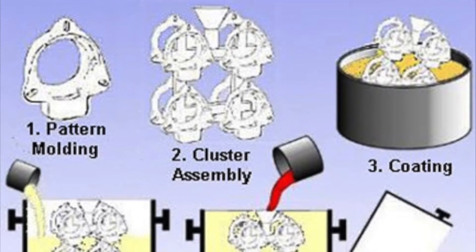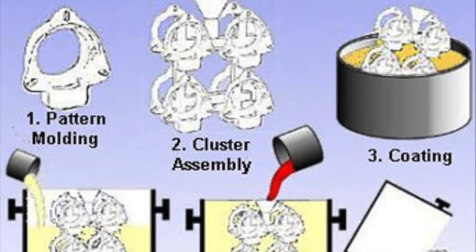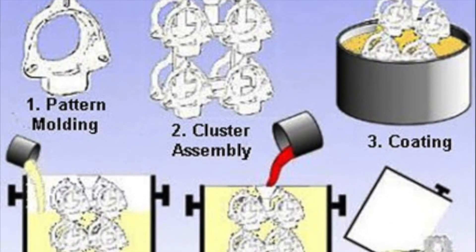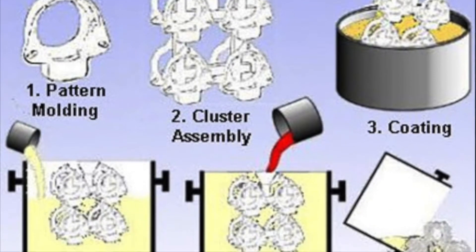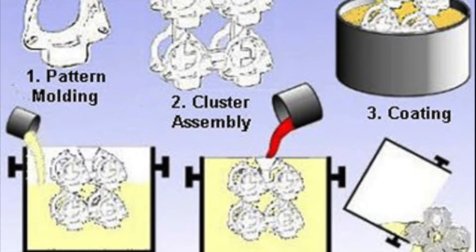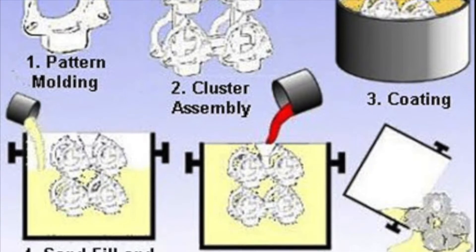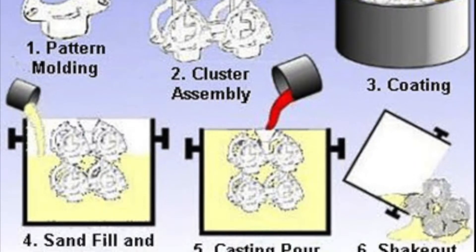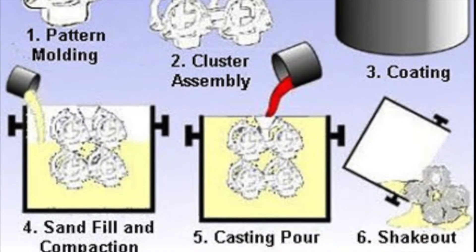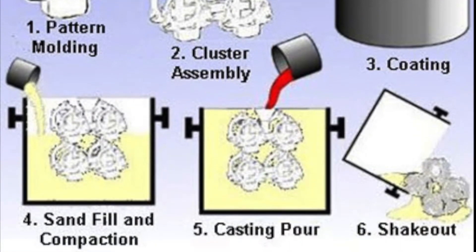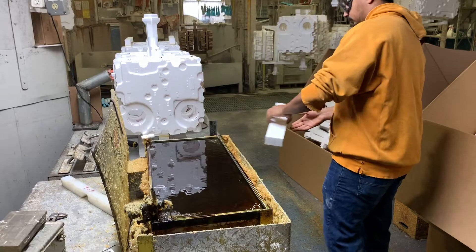Lost foam casting is the process of pouring molten metal over a foam pattern. The foam pattern then evaporates and the metal fills the empty space, creating a metal part in the shape of the foam pattern.